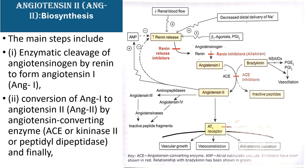The second step is angiotensinogen, which is synthesized and released from the liver and circulates in the blood. Renin acts on angiotensinogen and converts it into angiotensin 1 in the presence of renin. If a renin inhibitor like aliskiren is given, it inhibits the conversion of angiotensinogen to angiotensin 1.